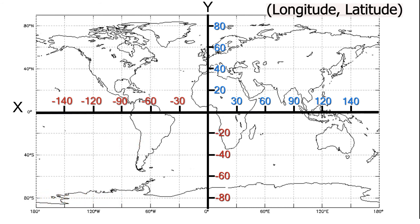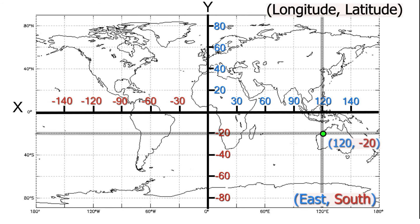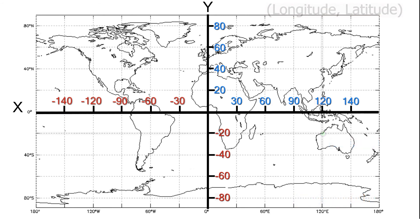In quadrant 4, we see a point on the coast of Australia at 120 degrees east and negative 20 degrees south, all relating to the X and Y value rules for positive and negative.